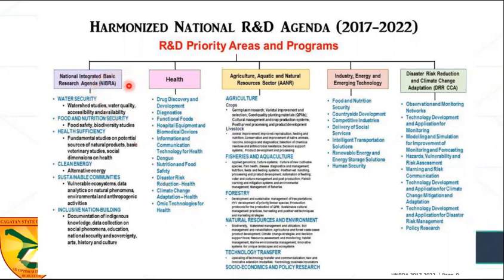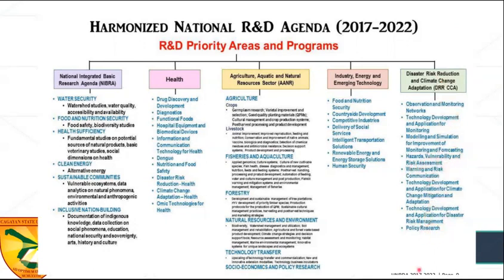You can also look at the basic research agenda. Under NIBRA, you can look into water security, watershed studies, water quality, accessibility and availability. You can also look into food and nutrition security, health sufficiency, clean energy, sustainable communities, and inclusive nation building. You can also go into DRRM for policy researches, and hazard vulnerability and risk assessment.